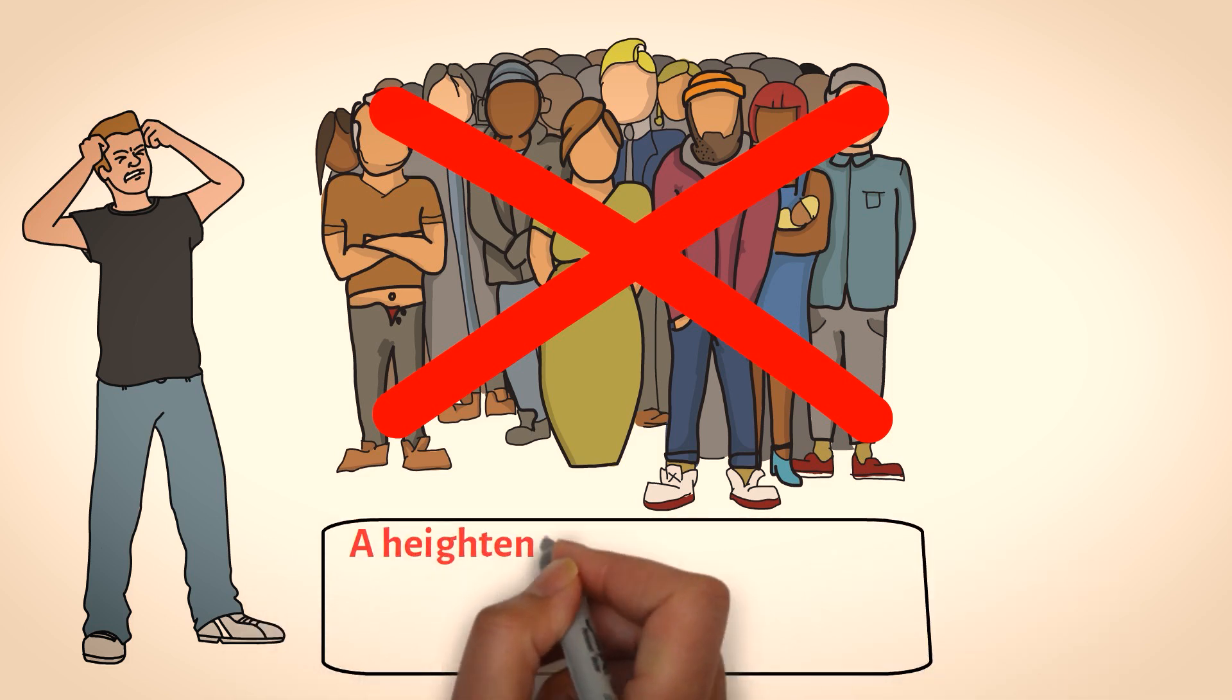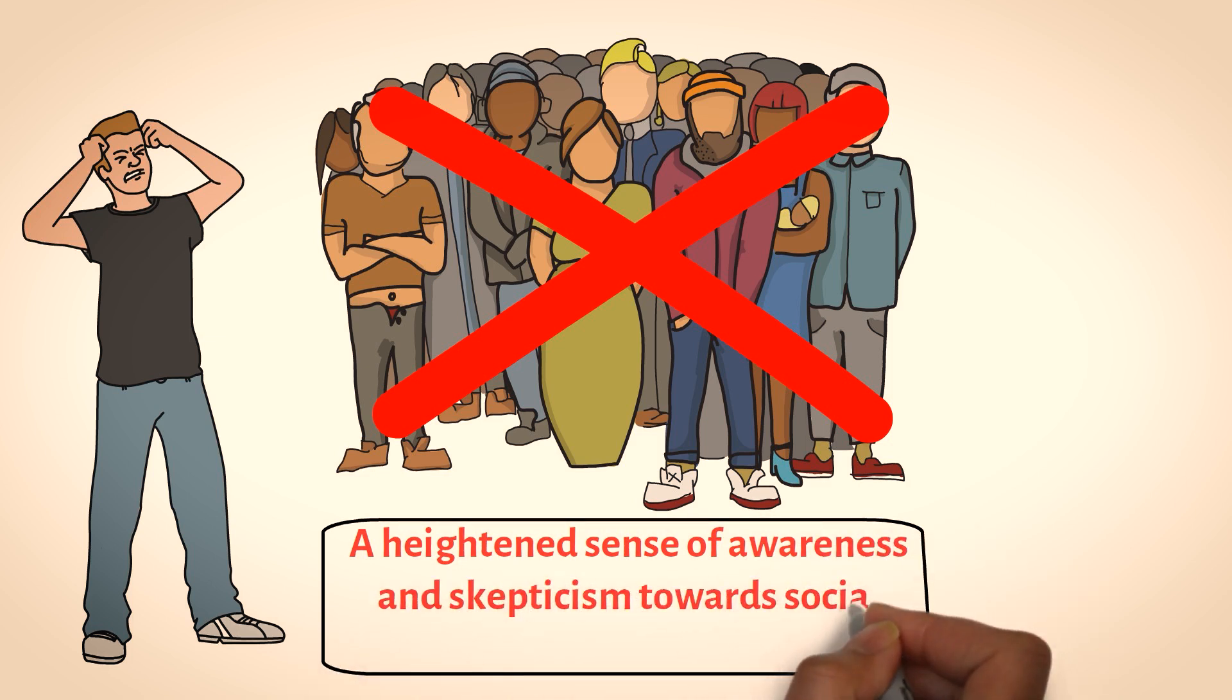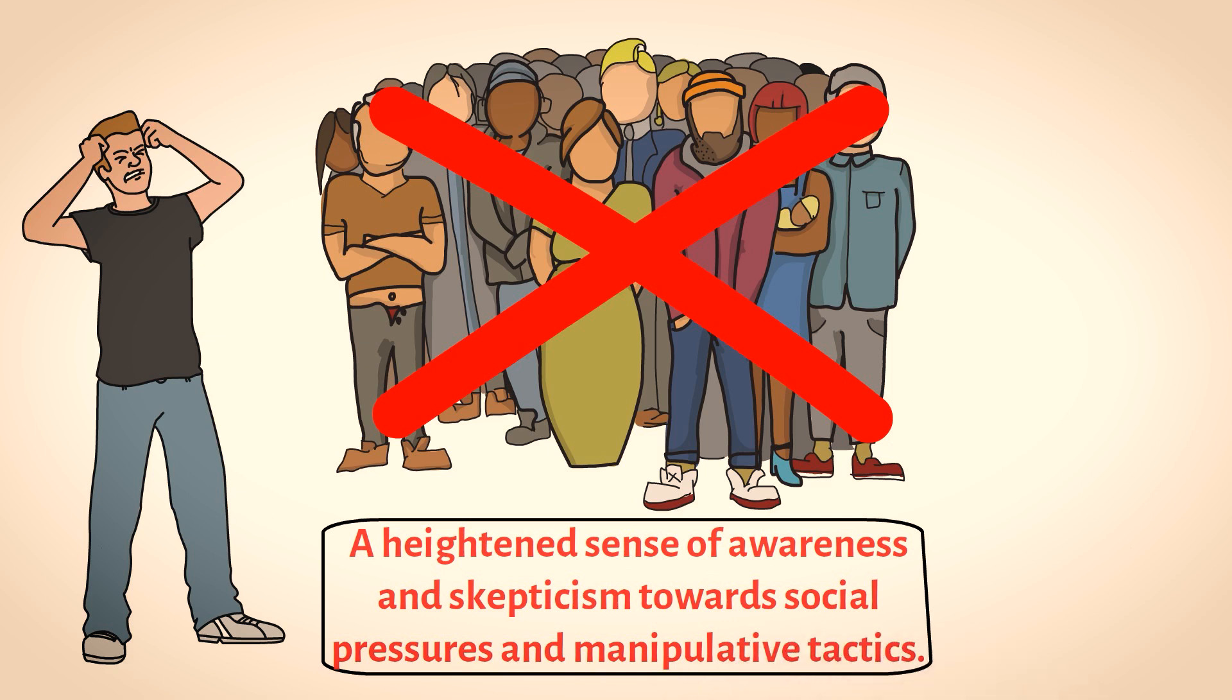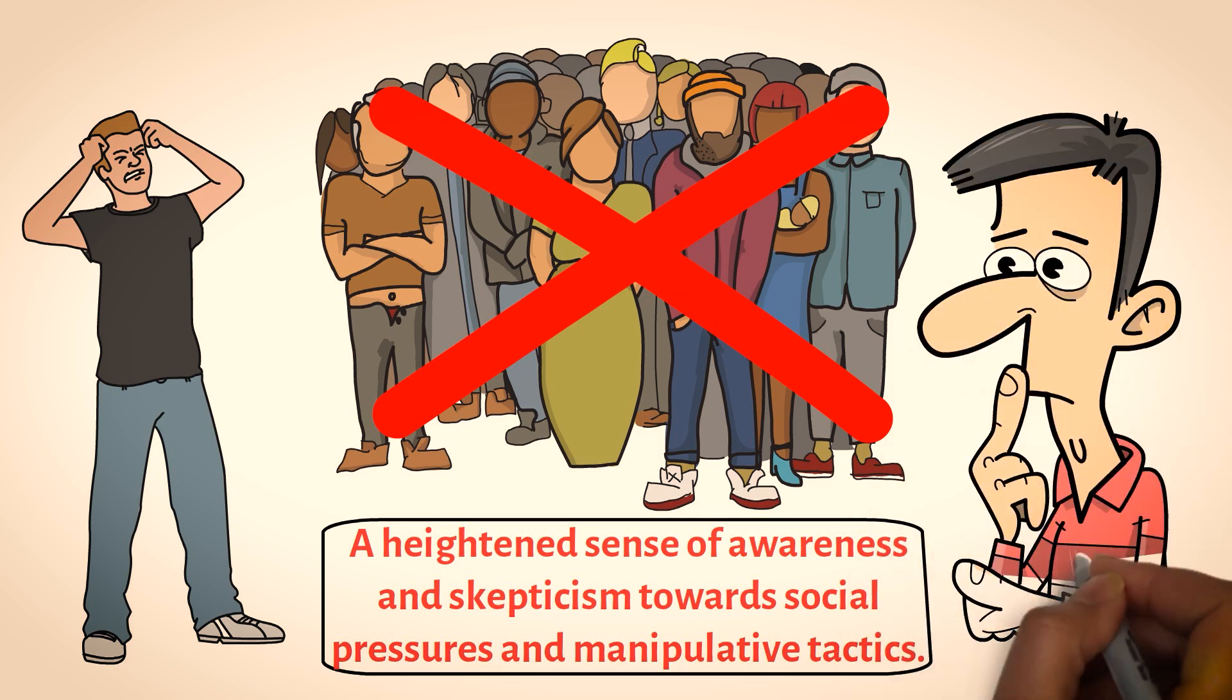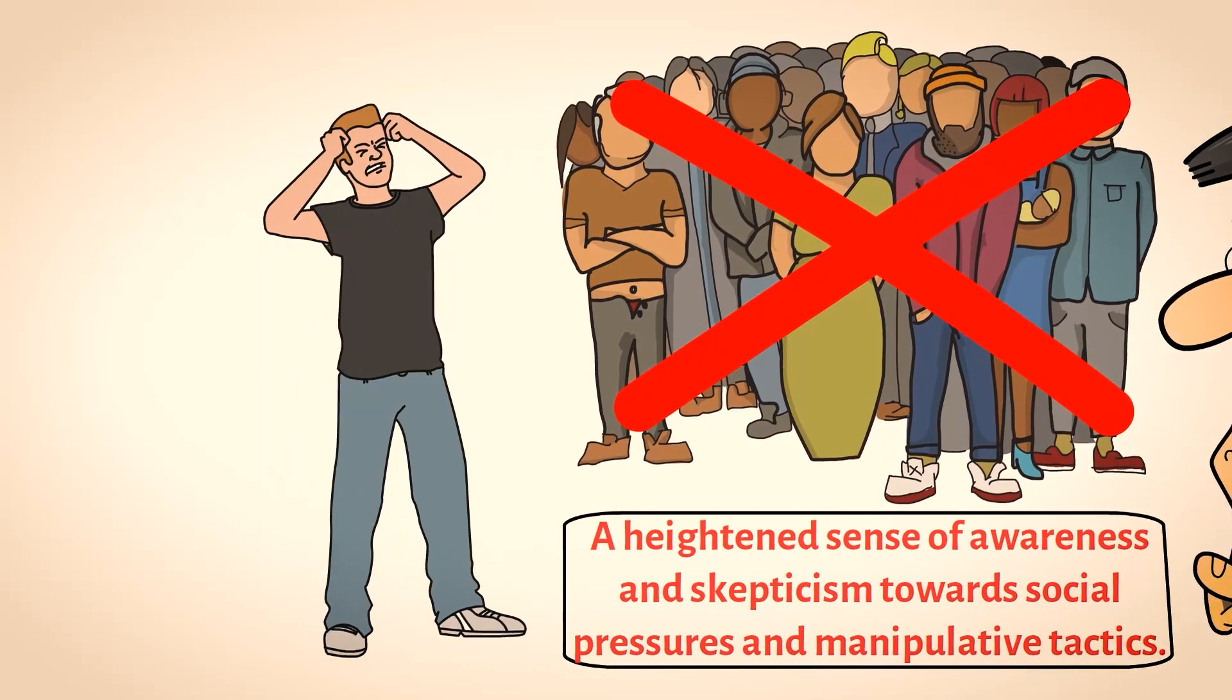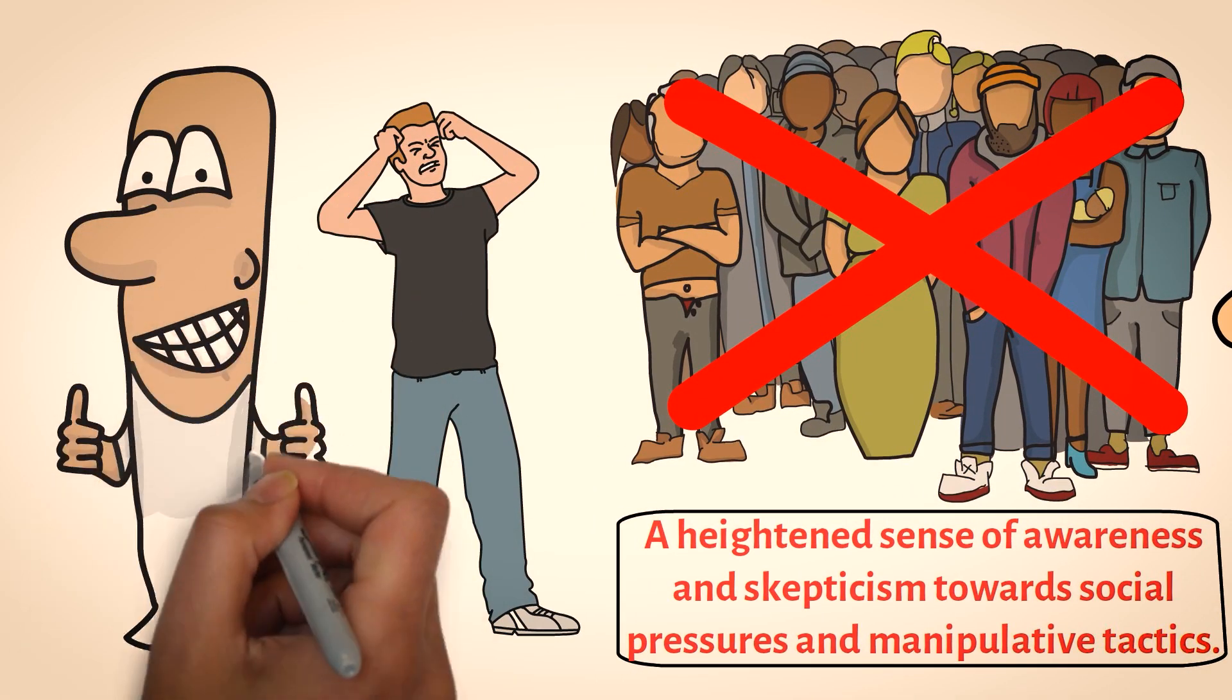Nonconformity can lead sigma males to develop a heightened sense of awareness and skepticism towards social pressures and manipulative tactics. By actively questioning societal expectations and norms, they are more likely to recognize when someone is attempting to manipulate them. Their ability to see through manipulative strategies can help them resist and protect themselves from being controlled.